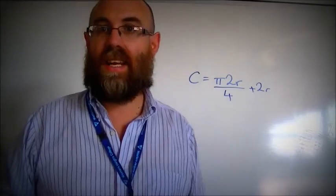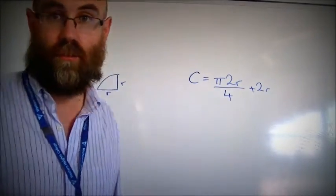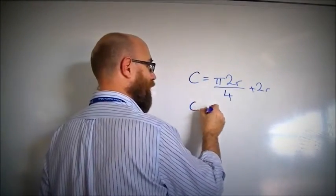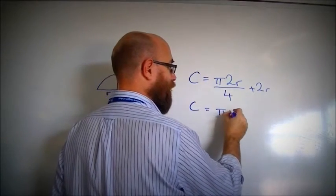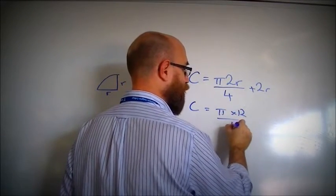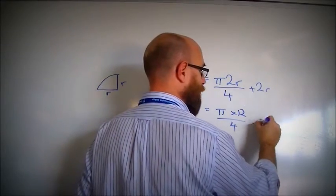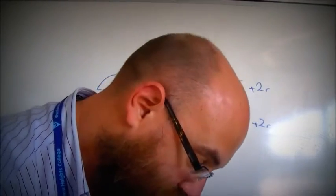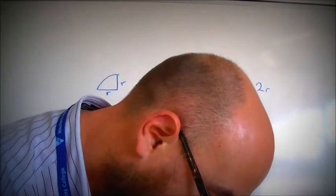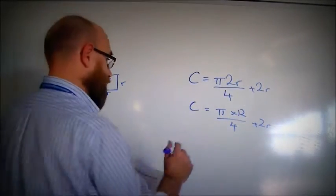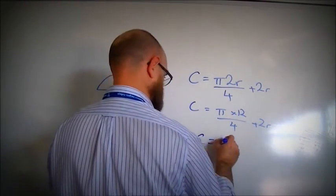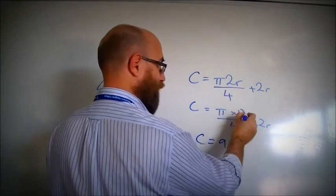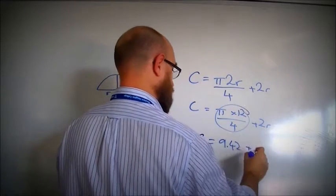Let's say that, again, I've got a 12 centimetre circle. So I know that C equals pi times 12, divided by 4, plus 2r. Let's have a look. I happen to know, because I'm looking at my cheat sheet here, 12 divided by 4, that that actually is 9.42. That's all of this stuff here, plus 12.